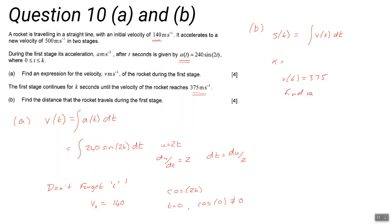So k equals t when v(t) equals 375. We then go back to our integral, and we know that we're talking about from the start to whenever k is. You need to integrate v with respect to time, and that gets you the distance traveled during the first phase.